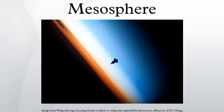This is also around the same altitude as the turbopause, below which different chemical species are well mixed due to turbulent eddies. Above this level the atmosphere becomes non-uniform, and the scale heights of different chemical species differ by their molecular masses.